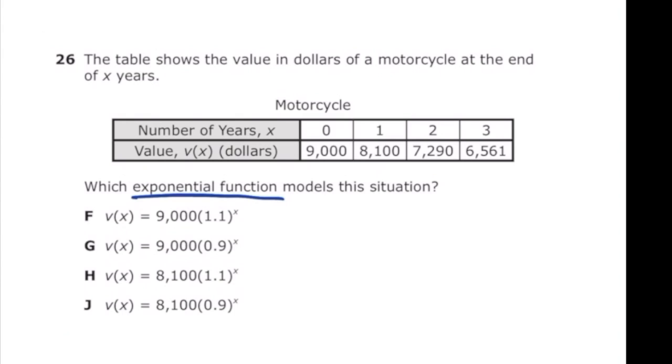The first thing I notice is that we're dealing with an exponential function and you could definitely solve this with the stat function on the graphing calculator but I'm going to show you an easy way to do this pretty quick. So the first thing I'm going to look for is what is the starting amount. At zero years we have $9,000 so we should have $9,000 at the start of our function. Letters H and J do not so we're going to go ahead and mark those out.